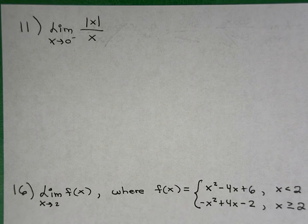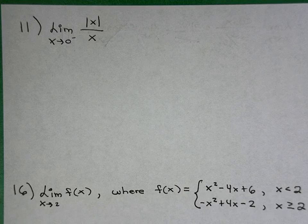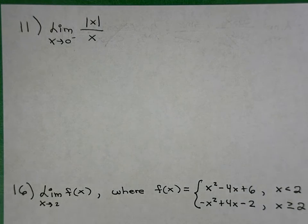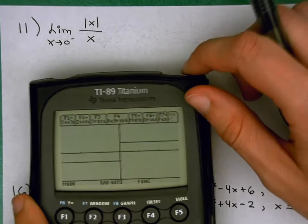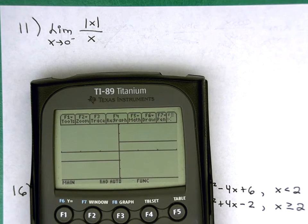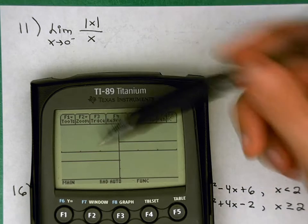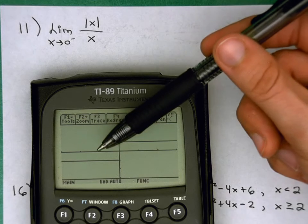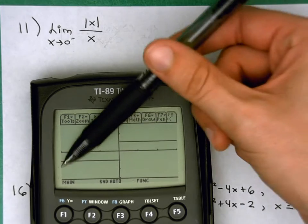And so I went ahead and graphed this function, absolute value of x over x, so we can see what it looks like. And our function will come out like this. As we're approaching 0 from the left, we're approaching 0 from values like x equals negative 1 and x equals negative 2, this side of the graph.